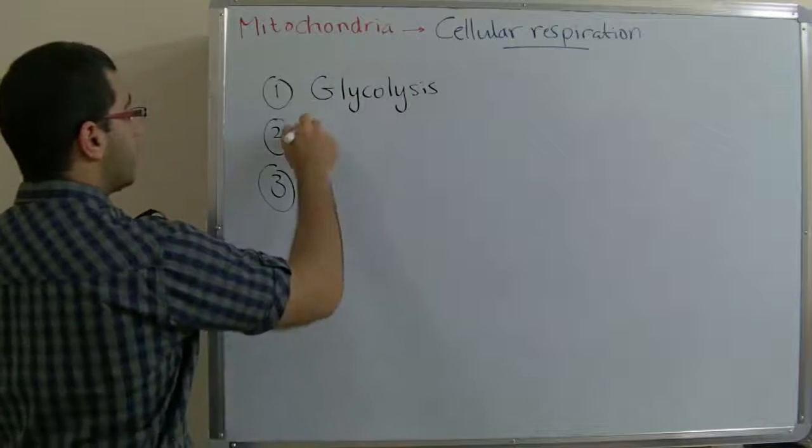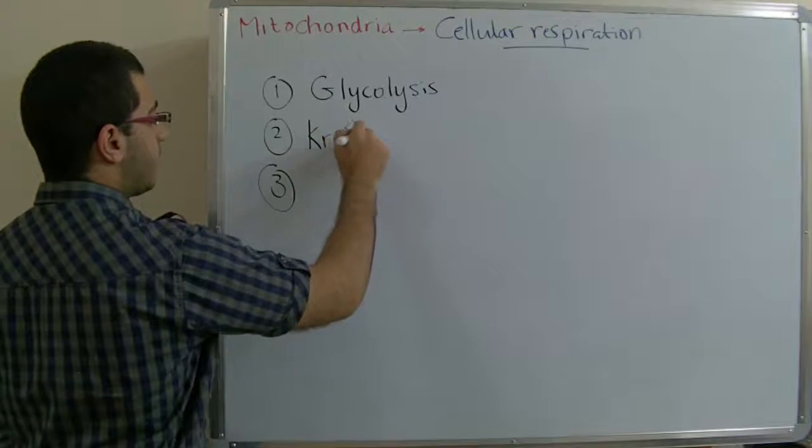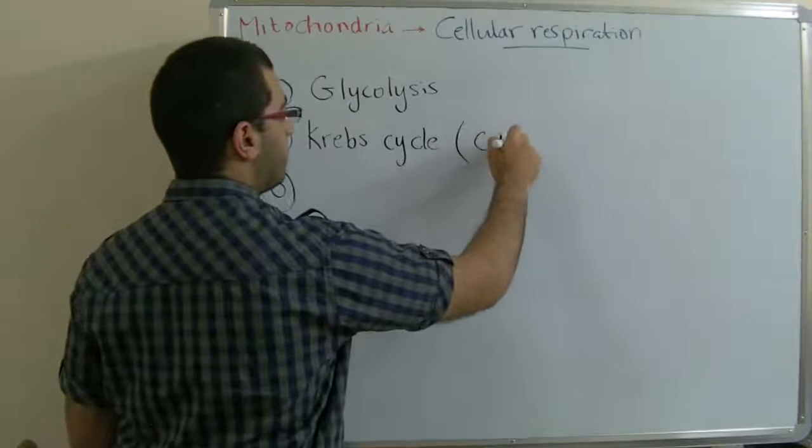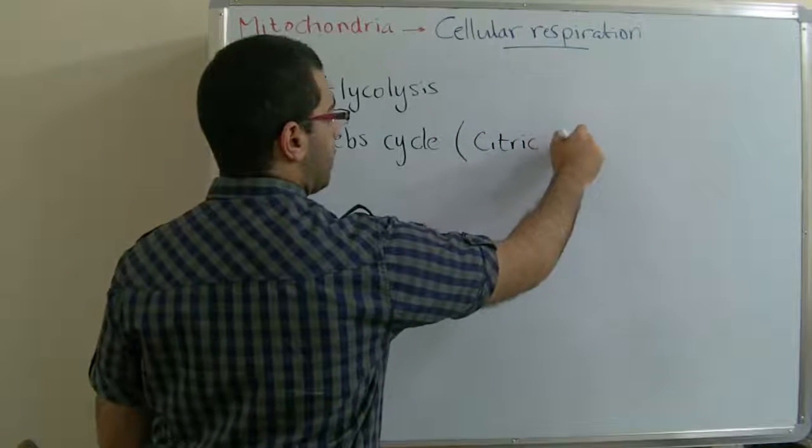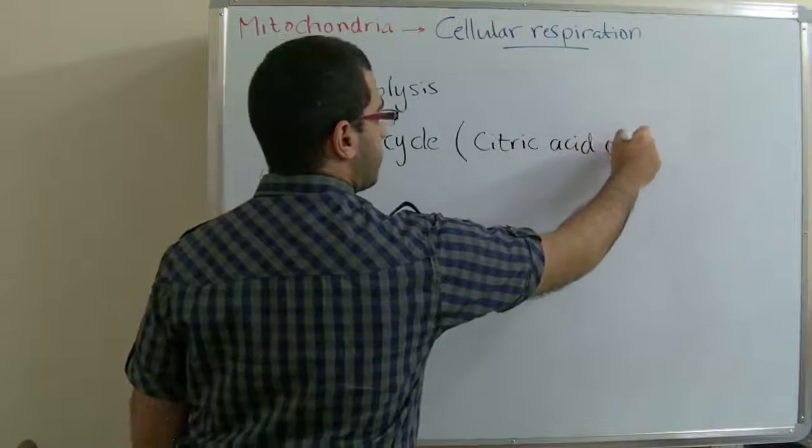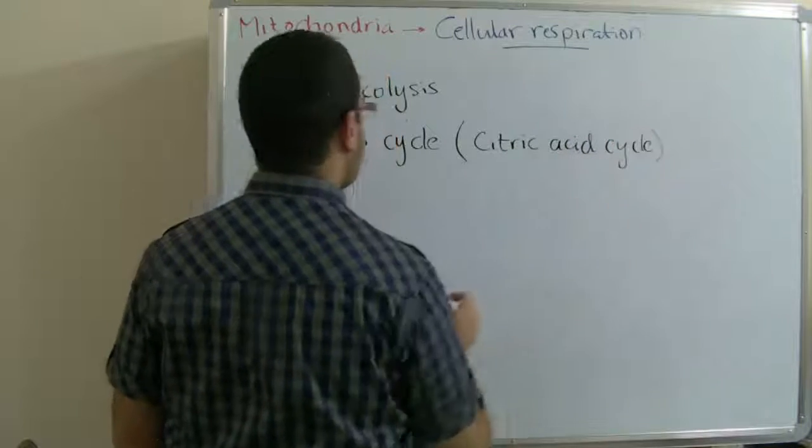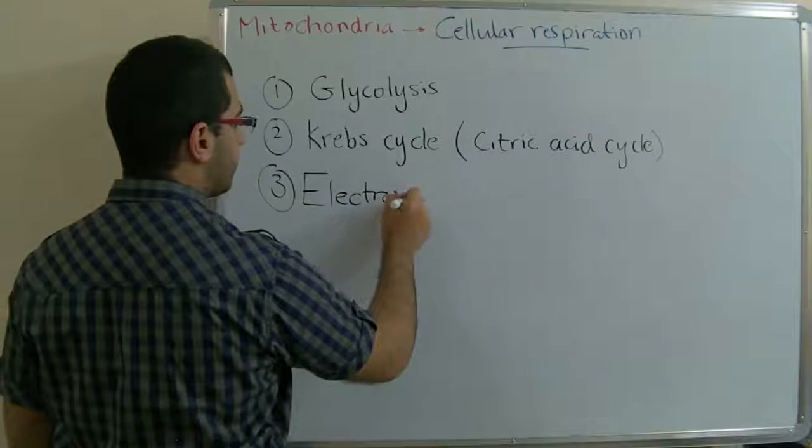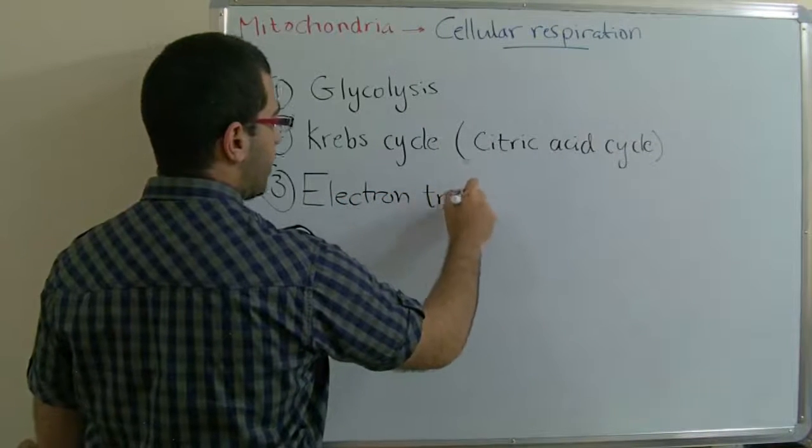The second is called Krebs cycle or citric acid cycle. And the last is called electron transport chain.